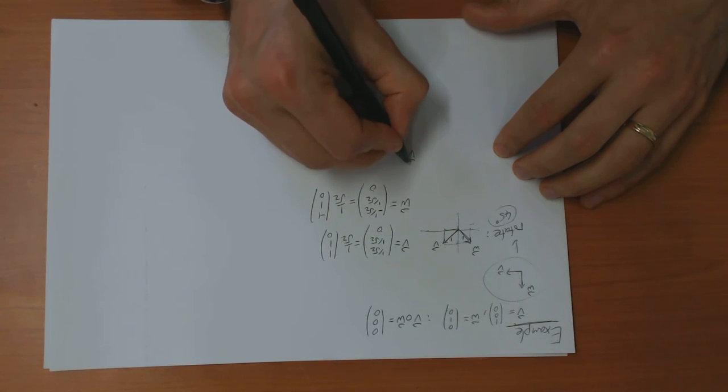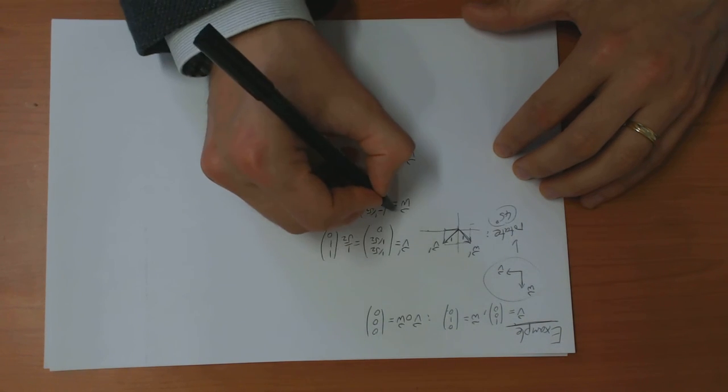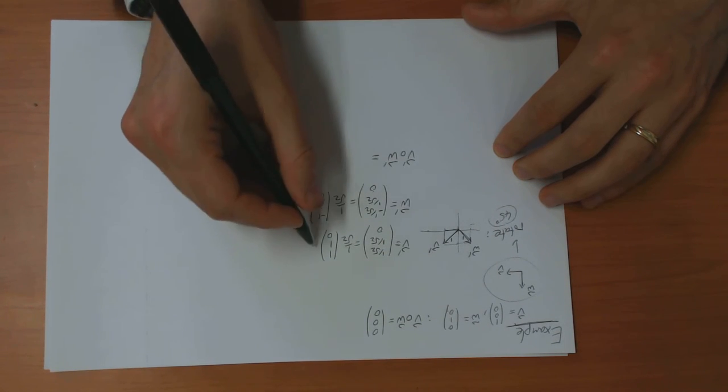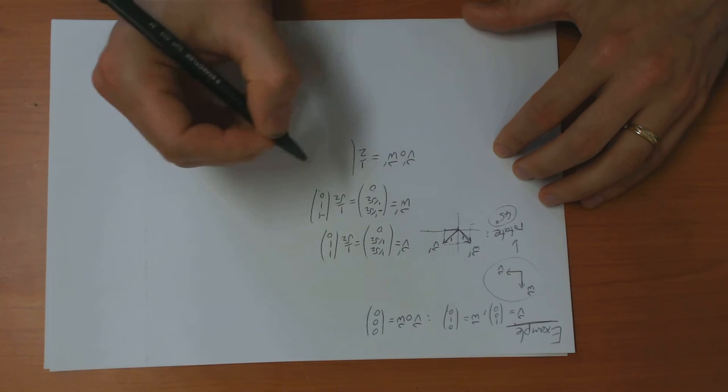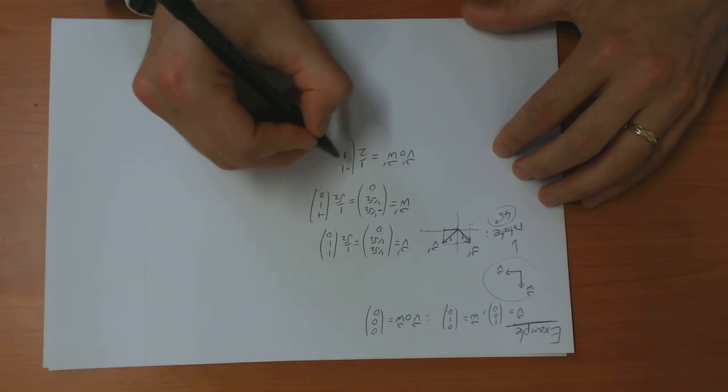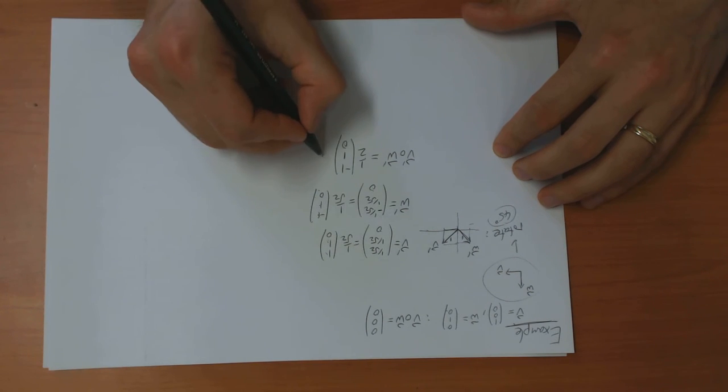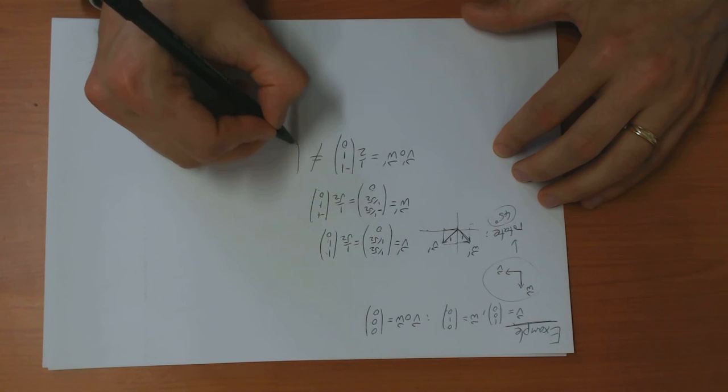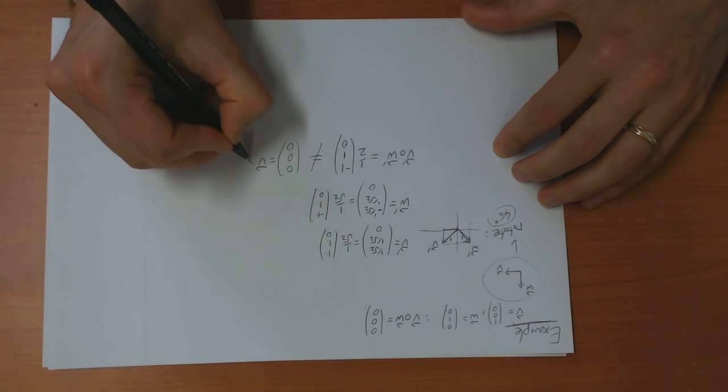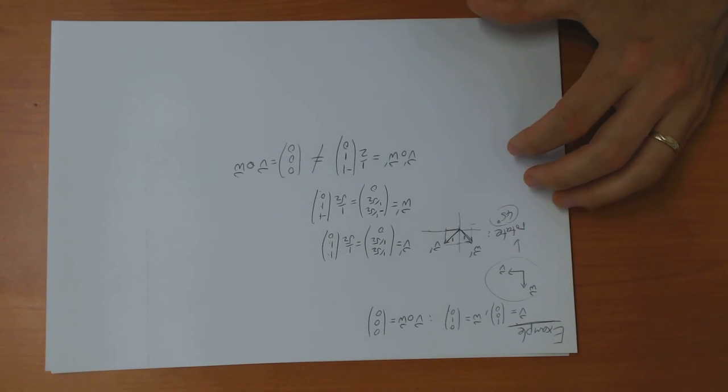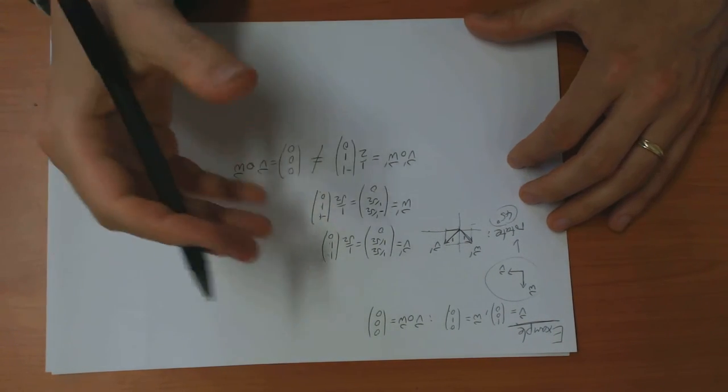And now if I compute in the prime frame, these are the primes, the circle product, then you get this times this, which gives you a half, this times this is minus 1, this times this is 1, this times this is 0. Which absolutely is not equal to the circle product in the original frame, not even equal to the rotated version of it.